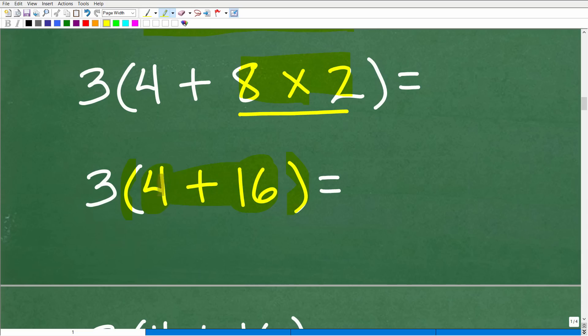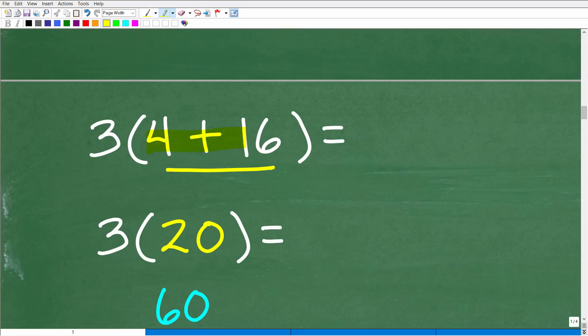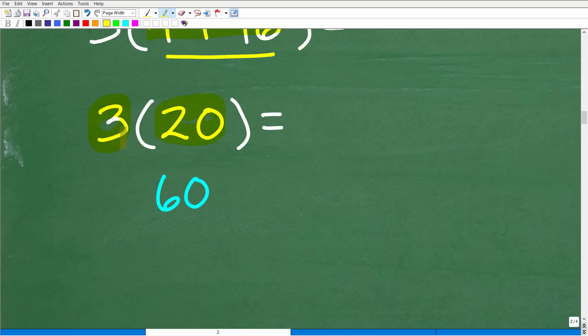So four plus 16 is what? Well, that's 20. So four plus 16 is 20. Now we're done. There's nothing more to do inside the parentheses. So now we leave the parentheses and then we take this and this is multiplication. This means three times 20, which, of course, is 60.